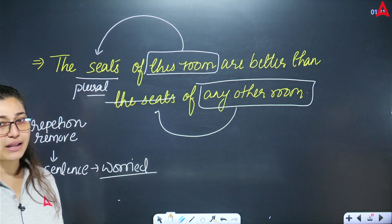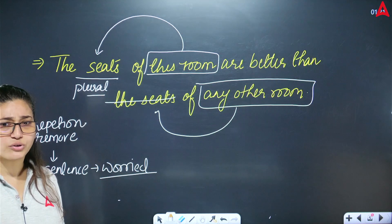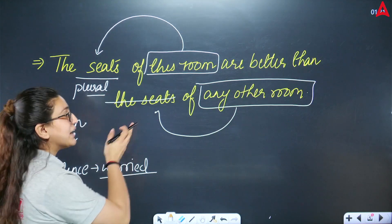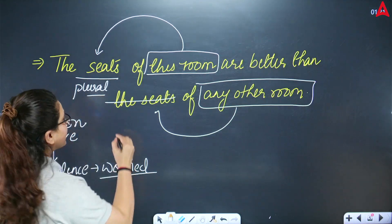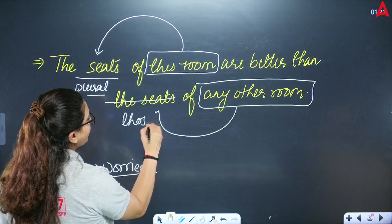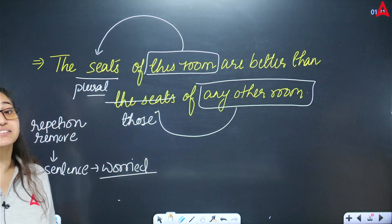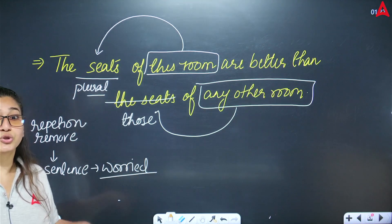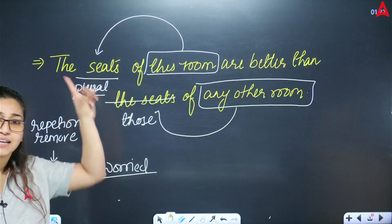So when you remove the repetition, you might be worried because it seems weird. But after removing it, there will be a replacement. What will replace 'seats'? The word 'those.' So the sentence becomes: 'The seats of this room are better than those of any other room.'